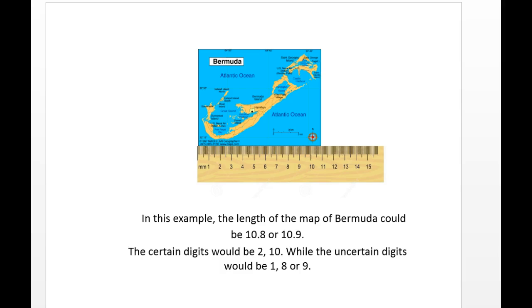When you look closely, it could be 10.8 or 10.9. Now, the certain digits would be 2, because I think everybody would agree that it is 10 and something. It's certainly not 9 - it's 10 and something. So is it 10.8 or 10.9? That's the uncertainty. The uncertain digit would be 1. Somebody might say it's 10.8, so the uncertain digit would be 8. Somebody might say 10.9, and the uncertain digit would then be 9.